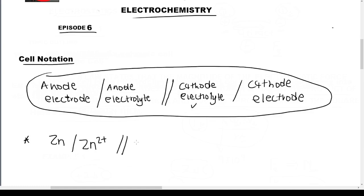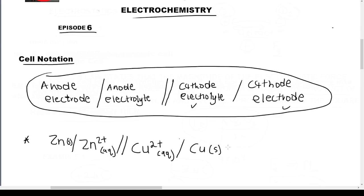Then the cathode electrolyte — that is copper sulfate, but the sulfate is a spectator ion, so it's going to be Cu²⁺. Then slash, then the cathode electrode which is copper solid. We know that this copper is a solid and copper two plus is in aqueous form, meaning the electrolyte is in aqueous or ionic form.